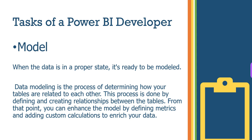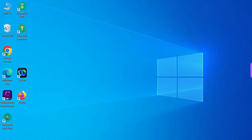Data modeling is the process of determining how your tables relate to each other. You put the data into the modeling view, and when you have two or more tables, you define relationships between them — this process is done by defining and creating relationships between tables so that once a relationship is established, you can enhance the model by defining metrics and adding custom columns to enrich your data.